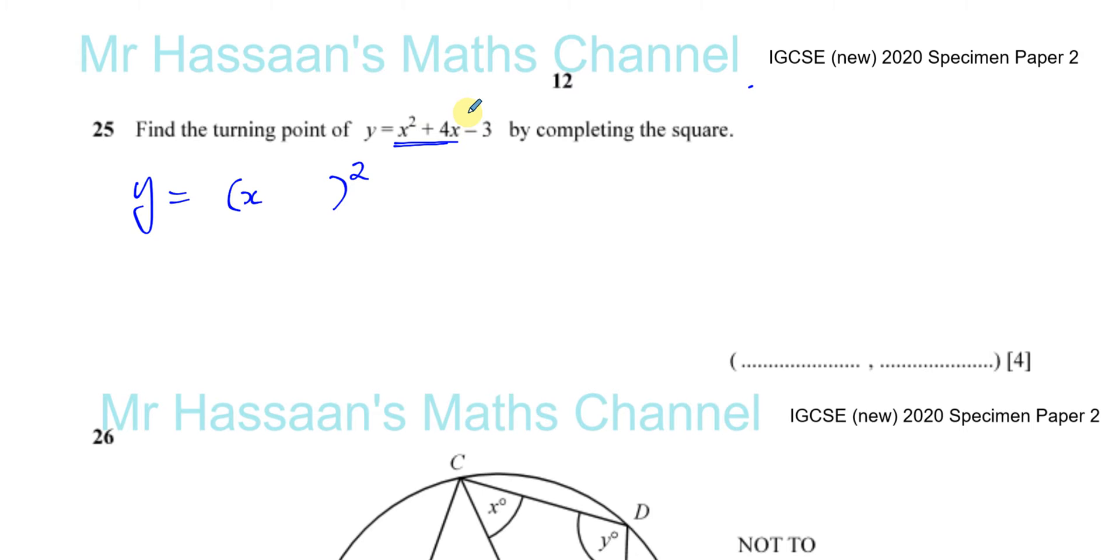I know that this is the middle term when I have a squared bracket. The x term represents twice this number here. So I'm going to put x plus 2. If I expanded this, I would get x squared plus 4x plus 4. But I don't want the plus 4 because we only have x squared plus 4x. So I'm going to take away 4.